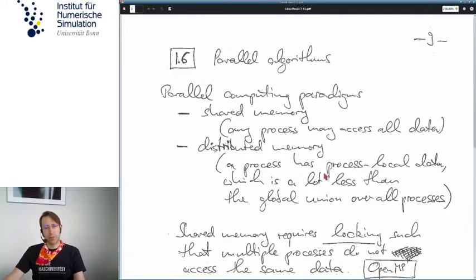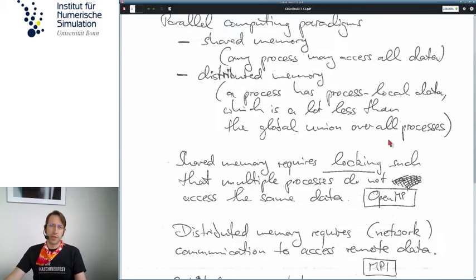So this model is called distributed memory, where a process has local data, process local data, but that can only be a very small fraction of the complete set of global data, which is basically the union over all processes of all data. So both approaches are valid and practical and used a lot in science and industry.